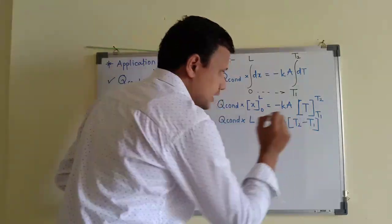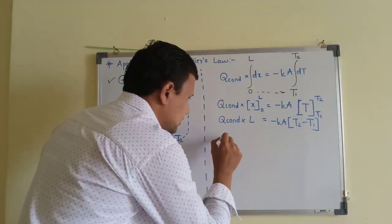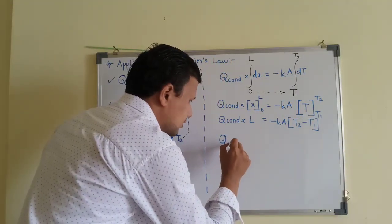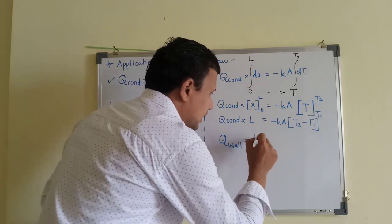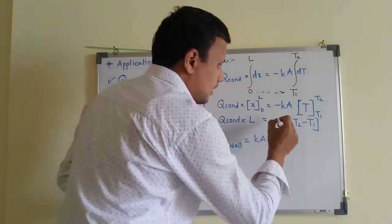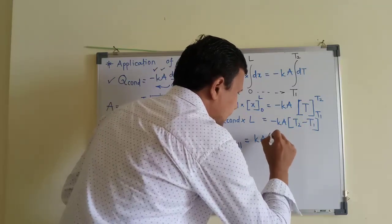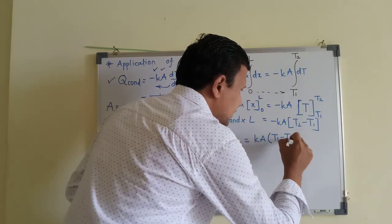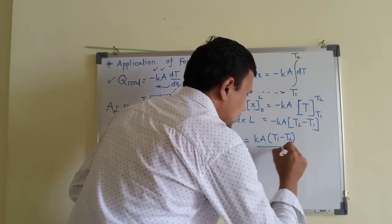Now we will absorb this negative sign inside the bracket. So ultimately we can get heat transfer by conduction in case of plane wall as KA after absorbing the negative sign as T1 minus T2 upon L.